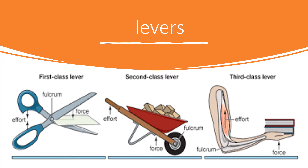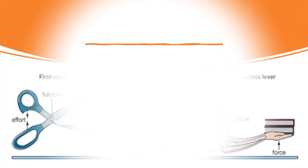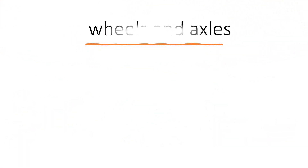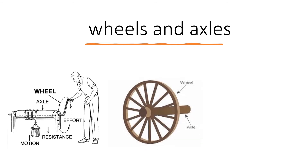There are three classes of levers. First-class levers — scissors are examples of first-class levers. Second-class levers — a wheelbarrow is an example of a second-class lever. The human arm is an example of a third-class lever.